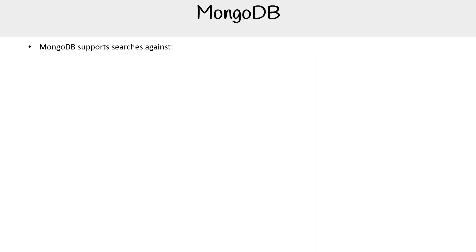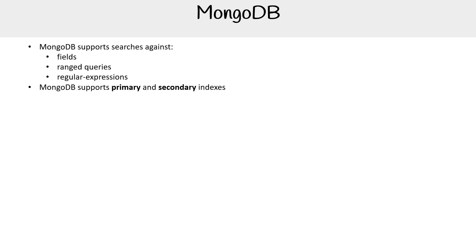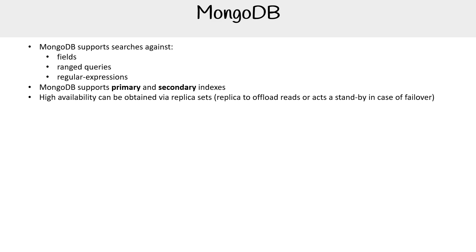To list out some features of MongoDB: it supports searches against fields, range queries, and regular expressions. It supports primary and secondary indexes. It's highly available — high availability can be obtained via replica sets, which can offload reads or provide a standby in case of failover.